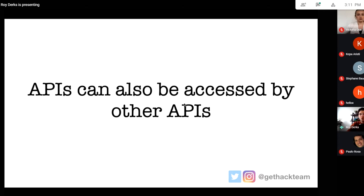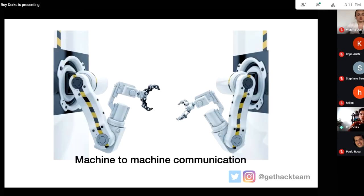When an API talks with other APIs, or a service connects with other services, we usually call it machine-to-machine communication. This connects multiple backends together or different services. In my case at Vandebron, we have smart solar panels and wind turbines that actually connect with our systems — it's a machine, not a person connecting, so it's machine-to-machine communication done through APIs.